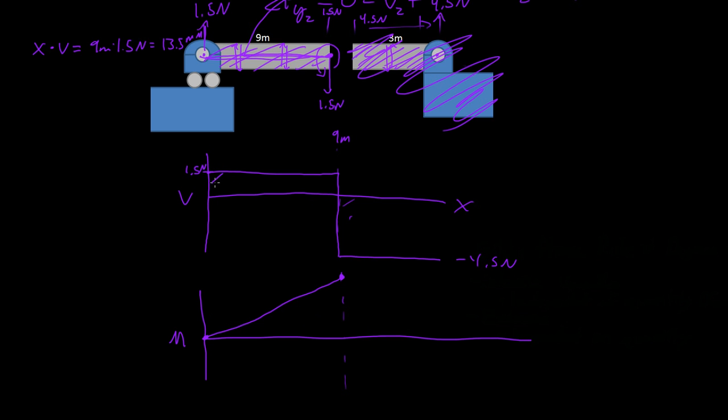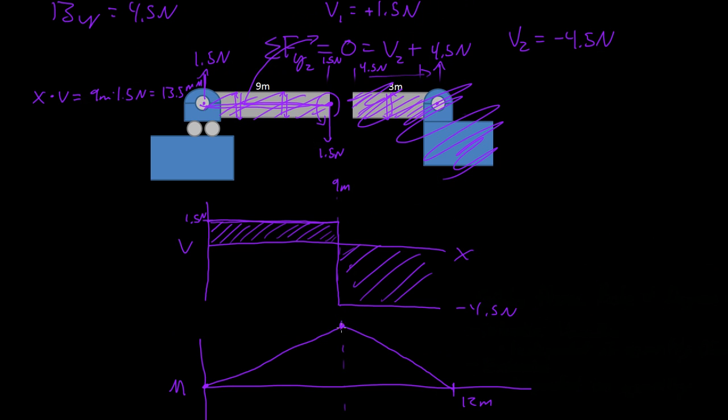Now what we notice there by doing that is we notice that's actually the area under this. So the area under this line will give you the moment. Now this is a negative area, so then the moment will actually start going down until we get to the 12 meter mark. So we actually found where the greatest moment was within the beam, and that is right there. And if we wanted to find the moment maybe right here, we would just go all the way down and this would be the moment at that point.